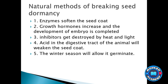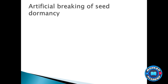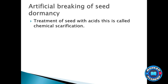Artificial breaking of seed dormancy involves methods we apply ourselves without waiting for natural processes. One method is treating seeds with acids, called chemical scarification. Chemical scarification means using a chemical such as acid applied to the seed. The acid cracks the seed coat or covering, and the seed is then in a position to germinate when planted.